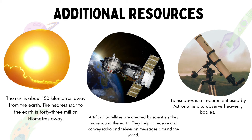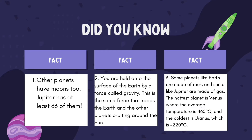Artificial satellites are created by scientists and they move around the earth. They help to receive and convey radio and television messages across the world. It would also interest you to know that other planets have moons, same as we have one on earth. In fact, Jupiter has 66 of them.